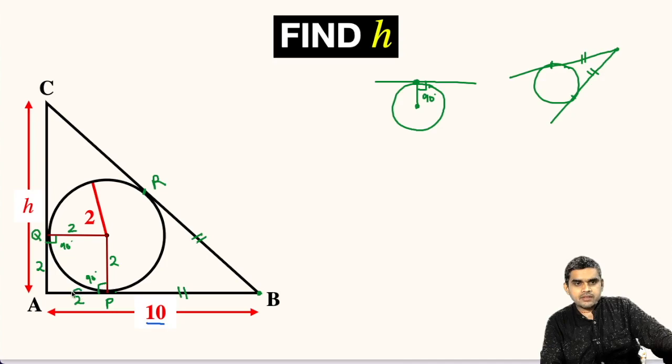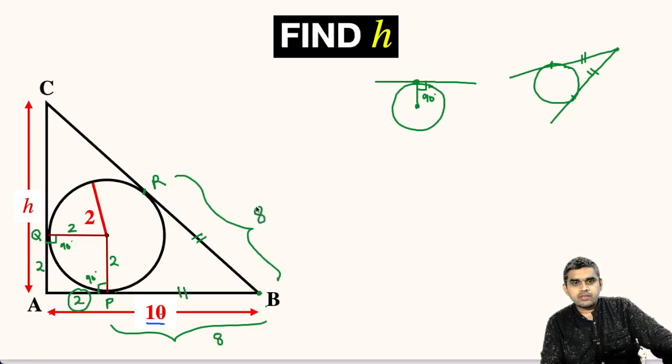If AP is 2 units then the measure of PB will equal to 10 minus 2 that is 8 units. Similarly, BR will also be equal to 8 units.